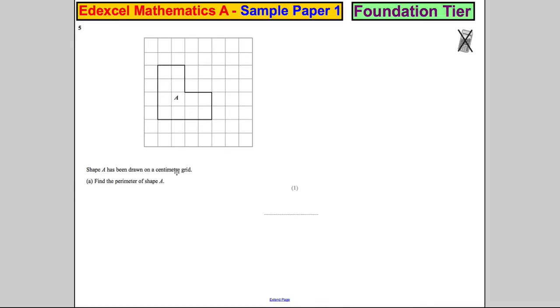Question 5. The shape A has been drawn on a centimeter grid for you. So here's our shape A and it's been drawn on a centimeter grid. That means that this is one centimeter and that is one centimeter. So each square must be one centimeter squared, one times one.